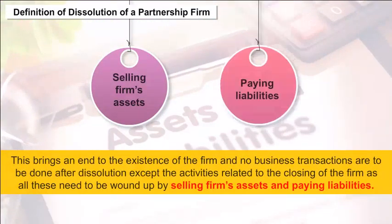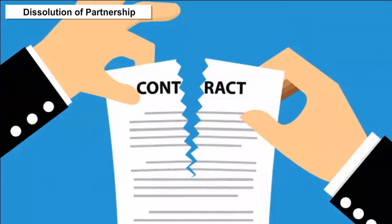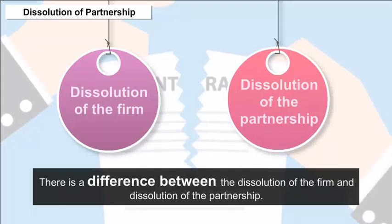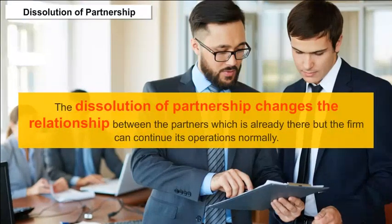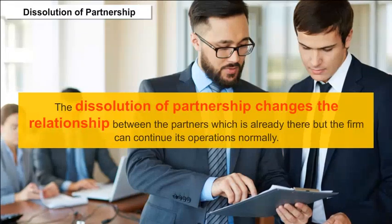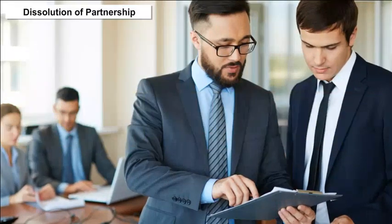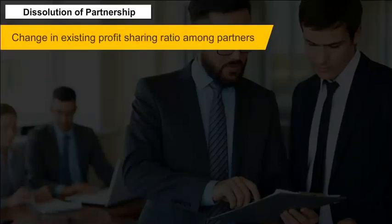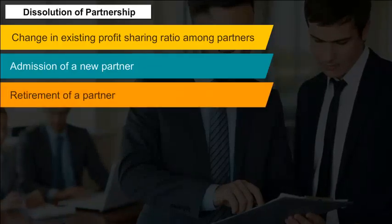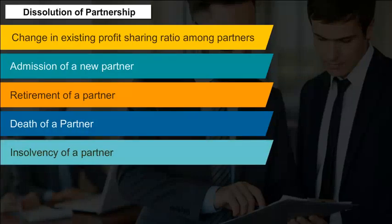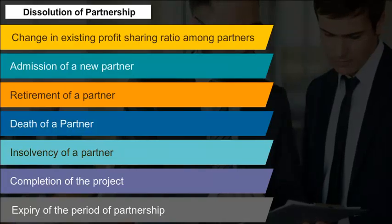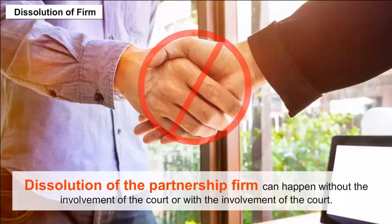Dissolution of Partnership: There is a difference between the dissolution of the firm and dissolution of the partnership. The dissolution of partnership changes the relationship between the partners which is already there, but the firm can continue its operations normally. The dissolution of the partnership may happen in the following ways: change in existing profit sharing ratio among partners, admission of a new partner, retirement of a partner, death of a partner, insolvency of a partner, completion of the project, or expiry of the period of partnership.